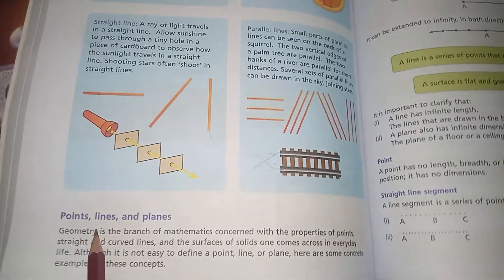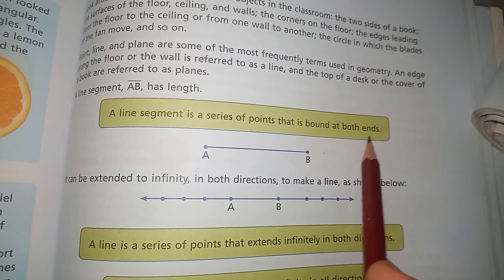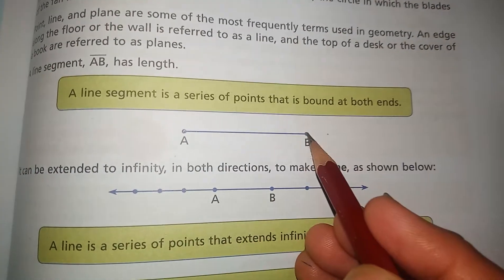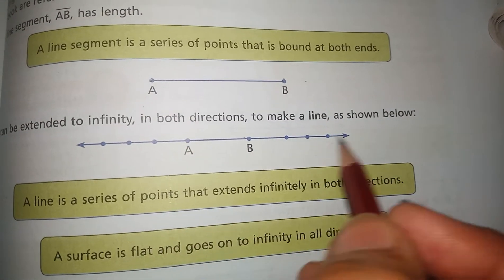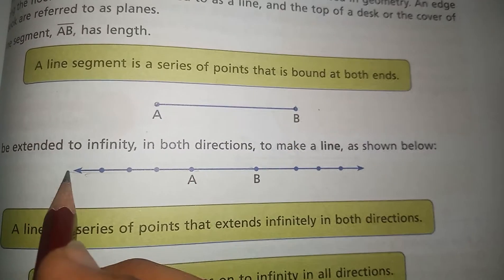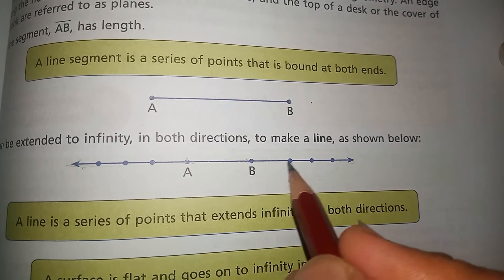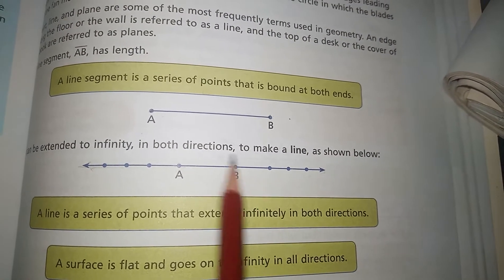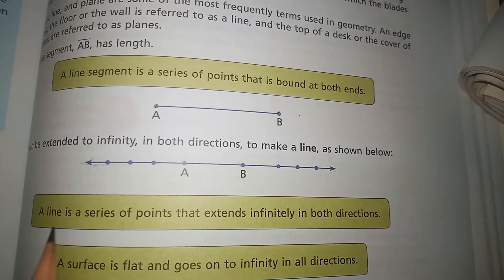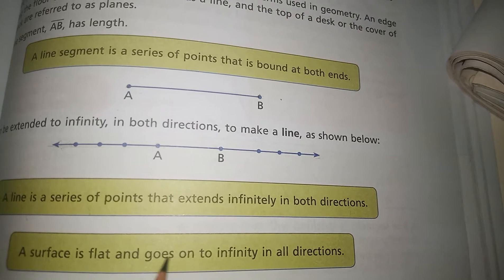What are points and what are lines? A line segment is a series of points that is bound at both ends. In a line segment there are two endpoints, and this line segment is bound at those two points — for example, line segment AB. A line is a series of points that extends to infinity in both directions, while the line segment is bound at two points.